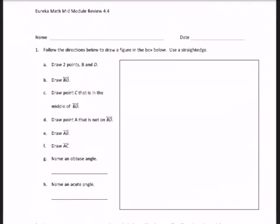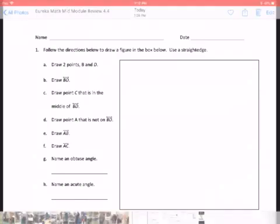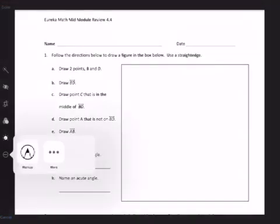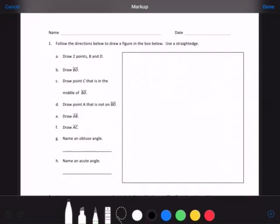A says to draw two points B and D. I'm going to draw two points and label them B and D. Here is point B and here is point D. You want to make the point big enough so that your teacher can see it, but not so big that it looks like you don't know what a point is.